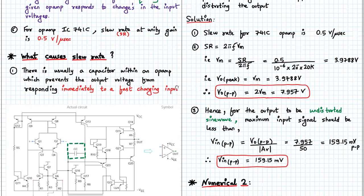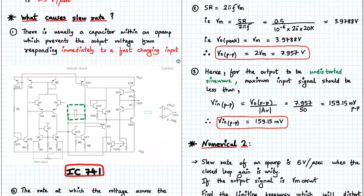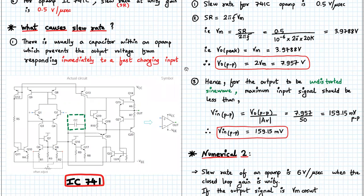So internally it consists of many transistors, many resistors and a single capacitor. Okay, so what's the origin of this slew rate? There is usually a capacitor within the op-amp IC which prevents the output voltage from changing or responding immediately to a fast changing input. Basically what happens is, whenever there is a capacitor,